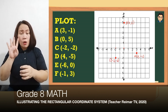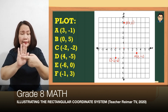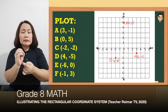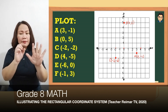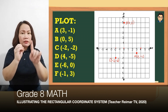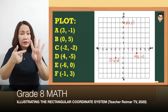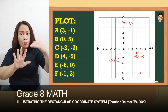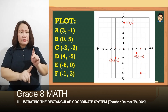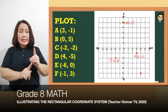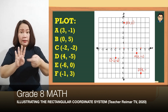Next, (4, -5). From the origin, mag-step tayo ng 4 to the right — ito po yung 4. And then negative 5, baba tayo ng 5 steps. So nagbaba po tayo ng 5, nakatapat po yung 4 saka yung negative 5. So pangalanan po natin siya as D (4, -5).